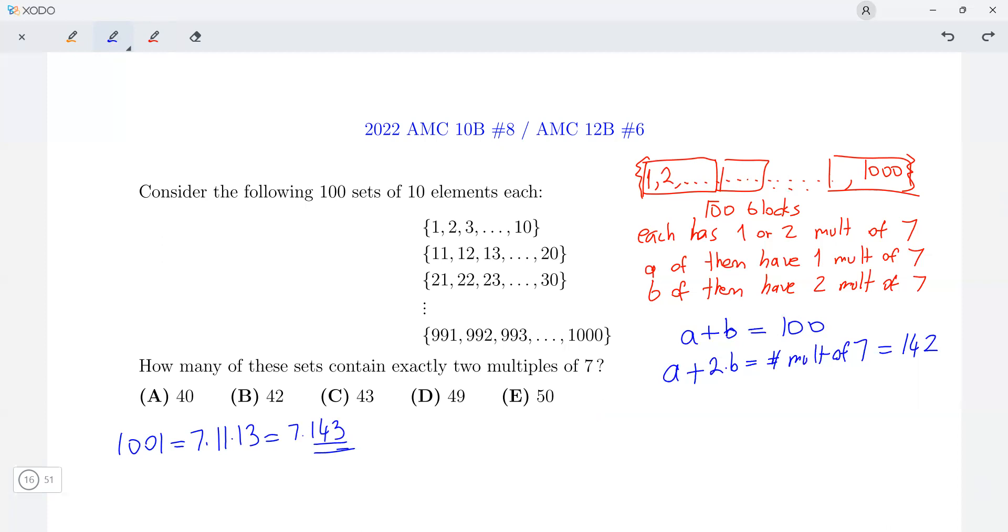Then we want to find b. How many of these have exactly two multiples of 7? To do that, we subtract the first equation from the second equation, and we get b equals 42. 142 minus 100. So the answer is B.